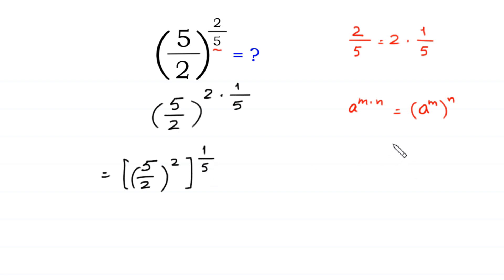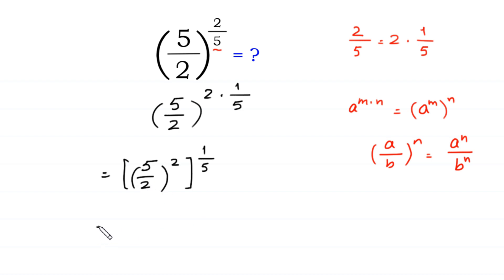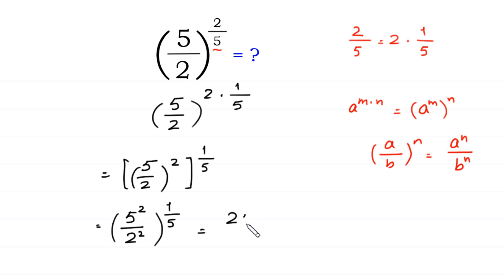According to this property of exponents, a over b, whole to the power n is equal to a to the power n over b to the power n. This power 2 will become the power of 5 and also the power of 2. So we get 5 squared over 2 squared, whole to the power 1 over 5. Now, 5 squared is 25 and 2 squared is 4, giving us 25 over 4, whole to the power 1 over 5.